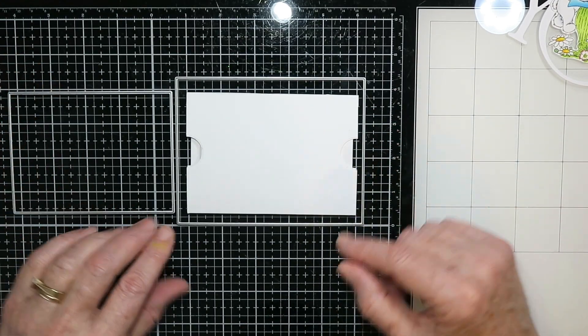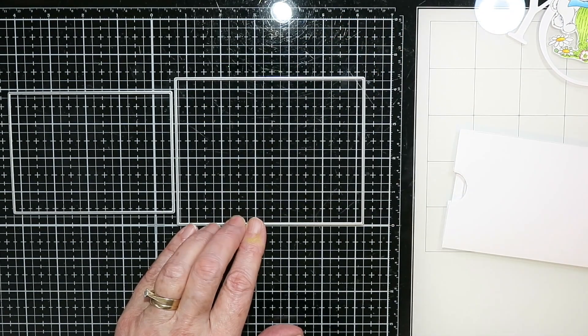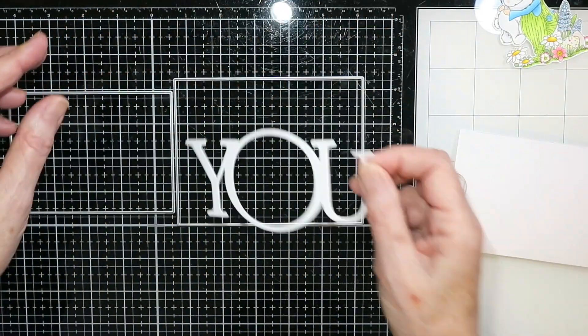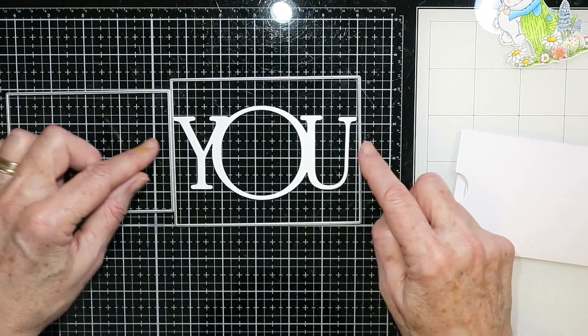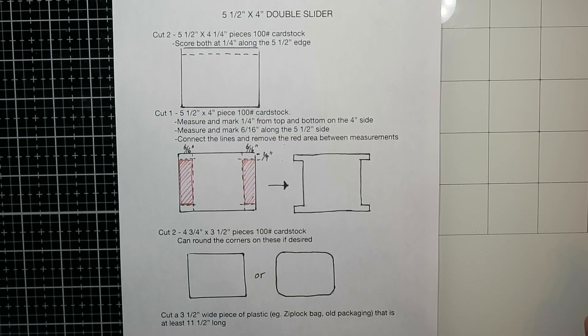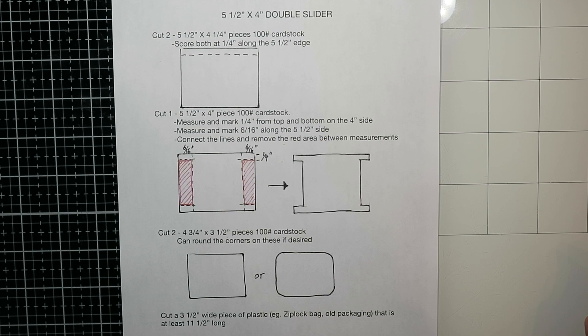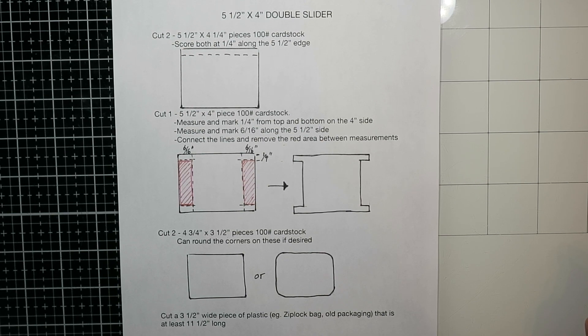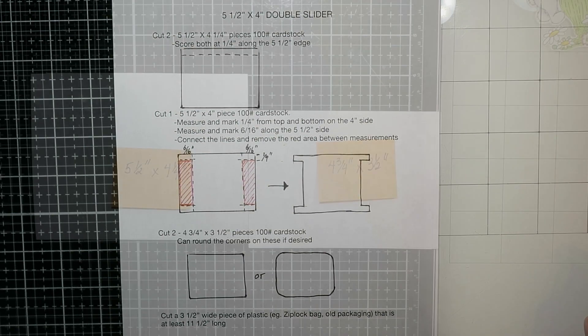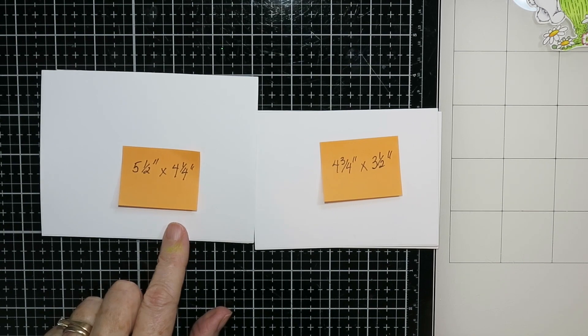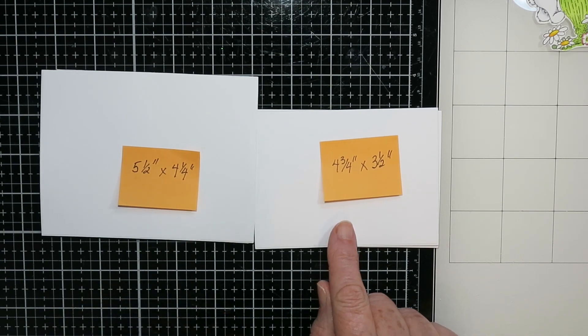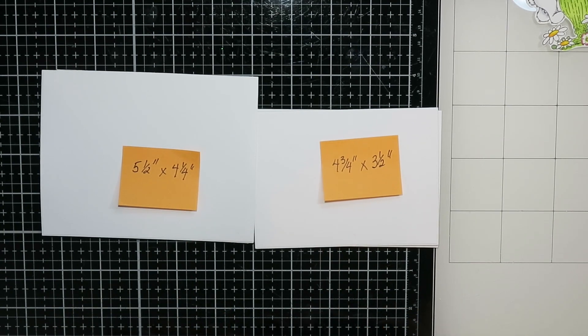So I just started playing with my rectangle dies and I came up with a template for a card that ends up being five and a half inches wide by four inches tall. Now this is my template if you want to take a screenshot or stop and write that down. I've cut two pieces of cardstock that are five and a half by four and a quarter inches and two that are four and three quarters by three and a half inches.